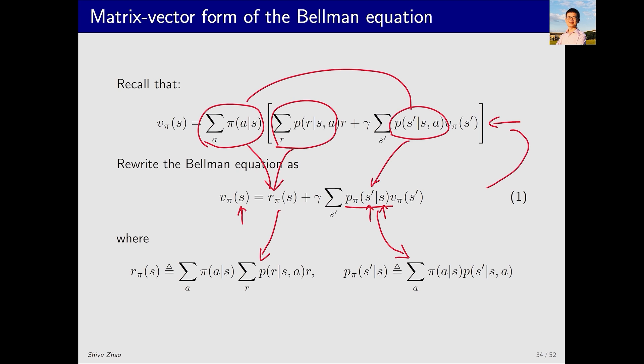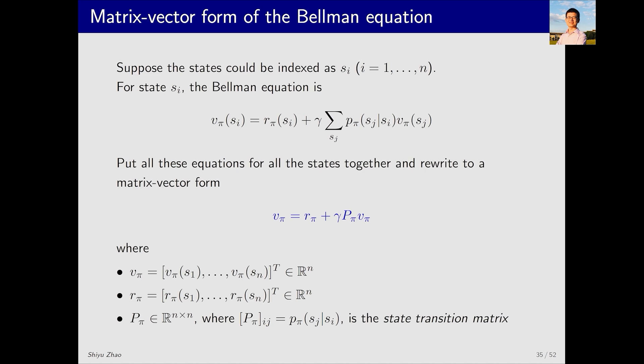Therefore, through this process, we derive an expression that simplifies the previous one. Furthermore, to represent it in matrix vector form, we need to combine all states together. Then, we need to assign labels to different states because using just s to represent them can lead to confusion about which state corresponds to which s. So, we label them as s1, s2, all the way up to s_n, assuming we have n states. Therefore, the equation becomes this.